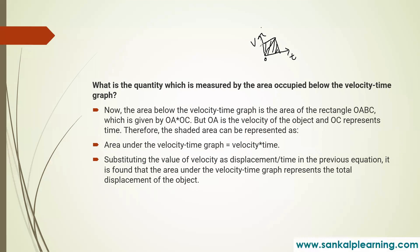If we name the points O, A, B, C, we can see that whatever area is covered under this velocity-time graph looks like a rectangle. Therefore the area of the rectangle is equal to length into breadth.